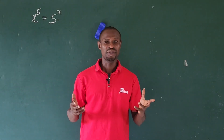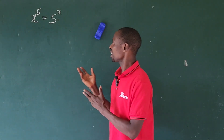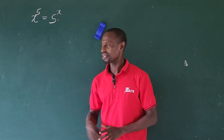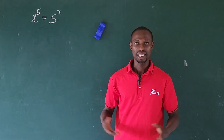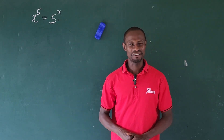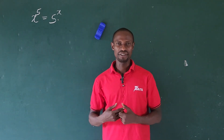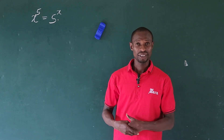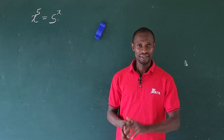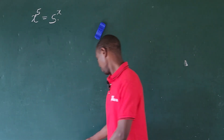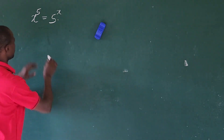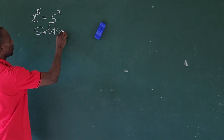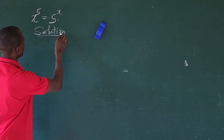Hi everyone, today we have a simple challenge on the board. With a trial-by-error method, the answer is straightforward — it will be five. But here I'm going to use two different approaches to solve this challenge.